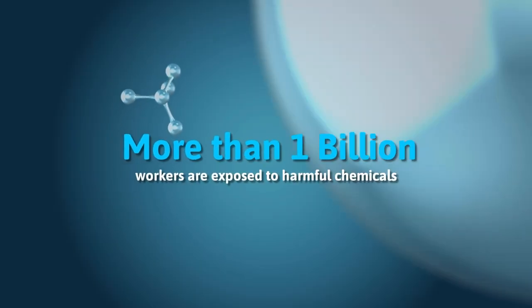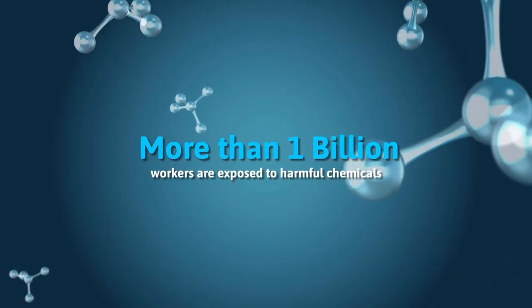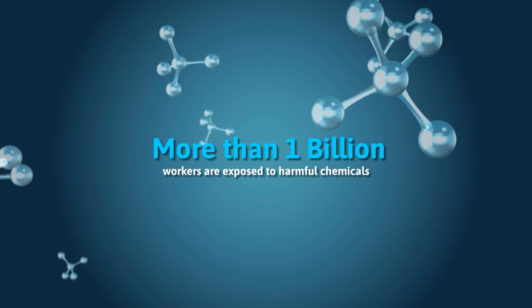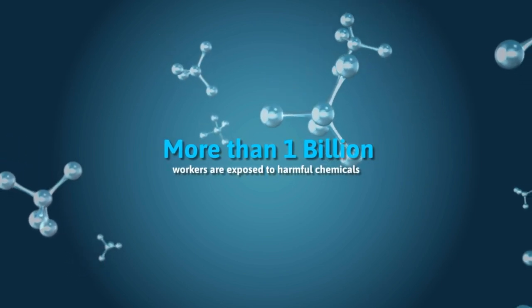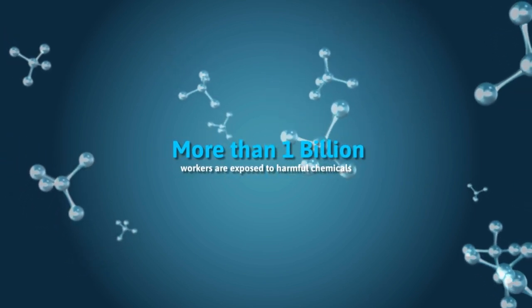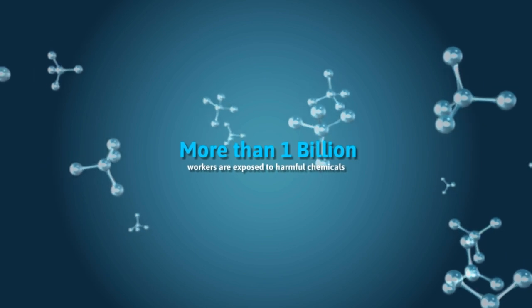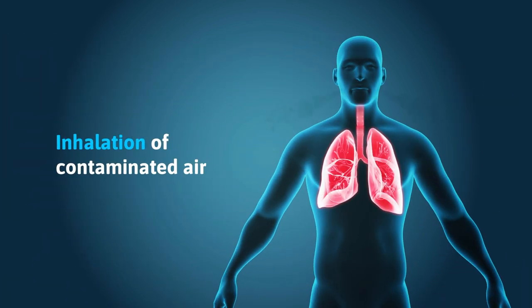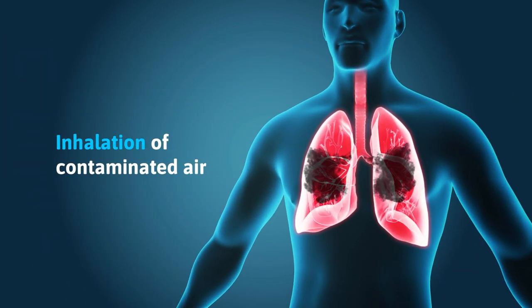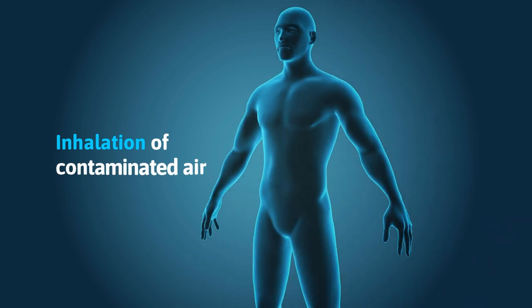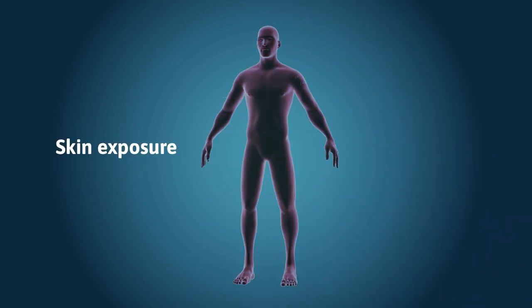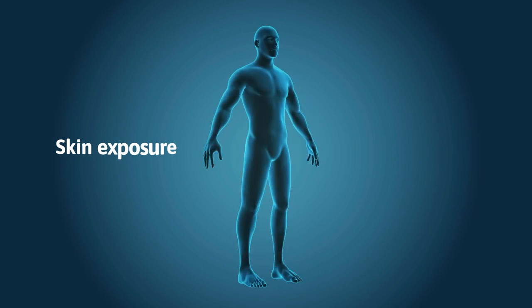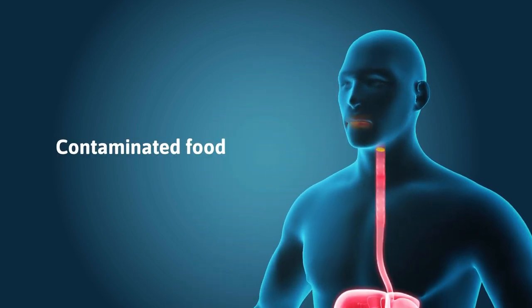More than 1 billion workers are exposed to harmful chemicals every year, with some even losing their lives as a result. The pathways to being potentially exposed consist of the following: inhalation of contaminated air, which is seen as the most common route of exposure, followed by skin exposure, which is often underestimated in many industries, then there is ingestion.